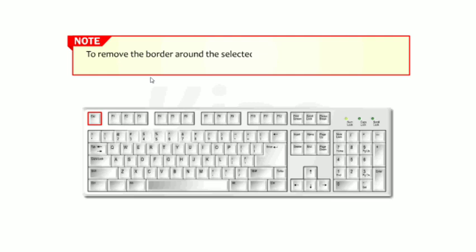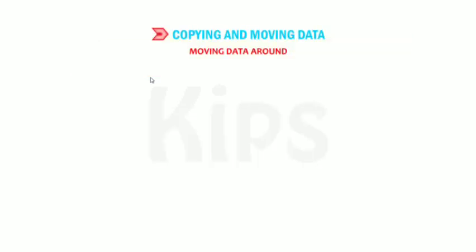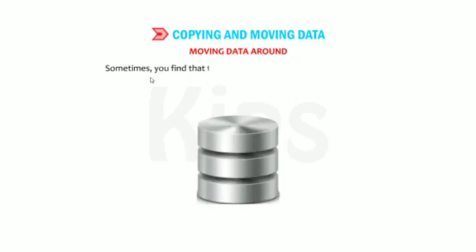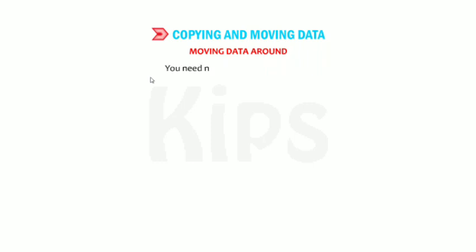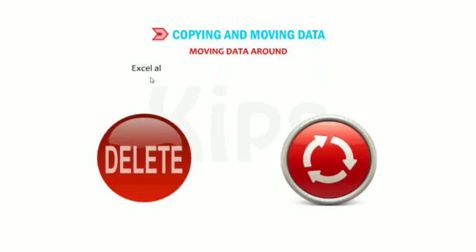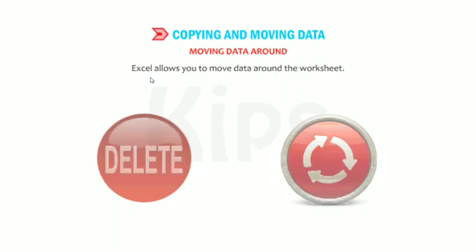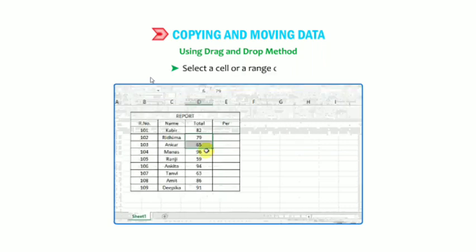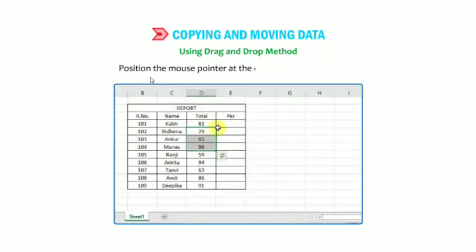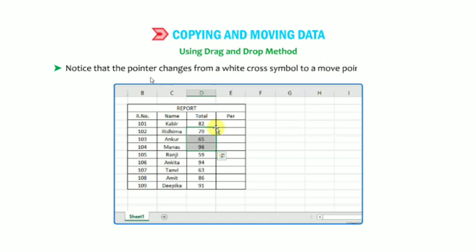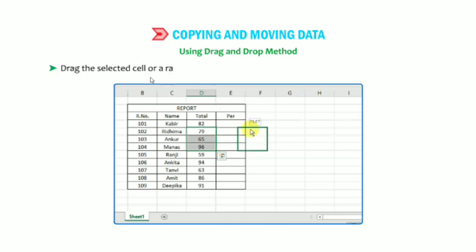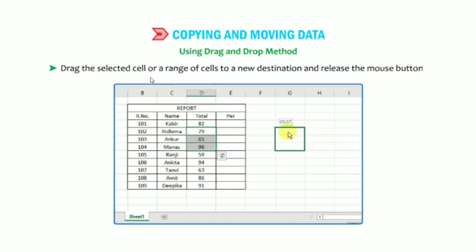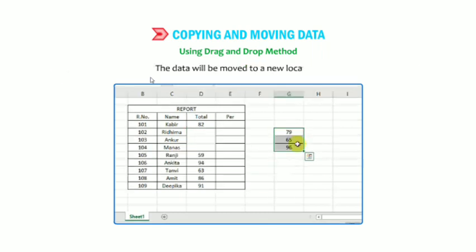Note: to remove the border around the selected cells after you finish copying, press the Escape key. Moving data around: sometimes you find that the placement of data is not appropriate — you need not delete and retype it. Excel allows you to move data around the worksheet using the drag-and-drop method. Select a cell or range of cells, position the mouse pointer at the edge of the selected cells. Notice that the pointer changes from a white cross symbol to a move pointer symbol. Drag the selected cells to a new destination and release the mouse button — the data will be moved to the new location.